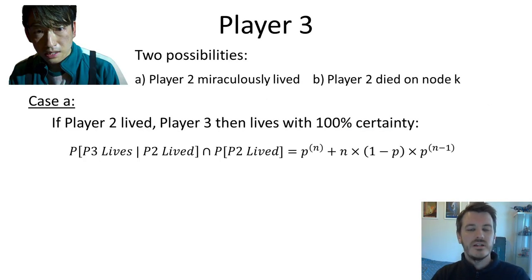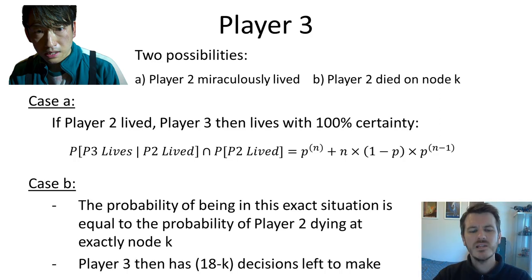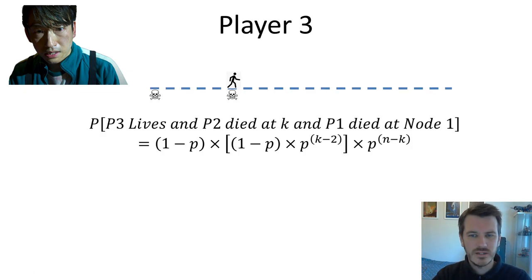Player 3 is where things do get very, very interesting and it's from player 3 onwards that I've been able to derive a general formula for any player. So again, we're going to use the same structure. We're going to start with two possibilities. The first is that player 2 miraculously lived. So we are going to take the probability from player 2 and carry it forward into case A. Of course, player 3, this probably isn't the case. Probably both players that went before him are dead. Case B, same again as what we saw before. So similar structure to what we talked about before with player 2. Let's have a look and I've drawn a makeshift diagram here to sort of illustrate this point. The conundrum for player 3 standing at node k.